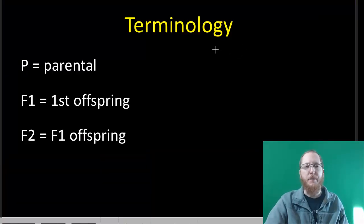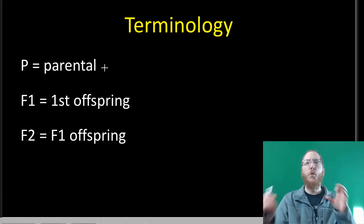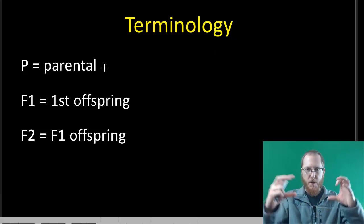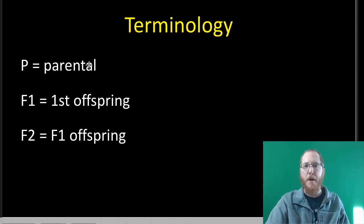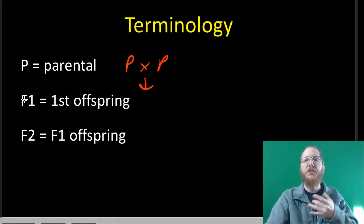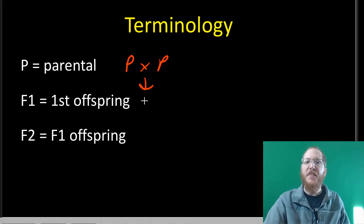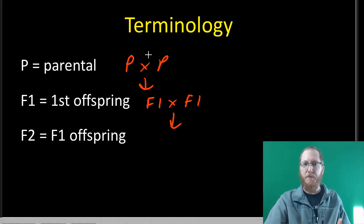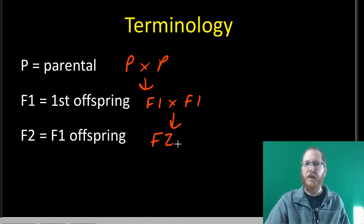So some basic terminology. When we start off, the two original plants that we're going to cross, that we're going to mate, those are going to be our parents, our parental, or P generation. Once we've gone through and we've crossed the parents with the parents, we're going to get offspring, and we call those offspring F1, or first filial, the first set of offspring. We can then take an F1 plant and we can cross it with another F1 plant. And that's going to allow us to get essentially grandchildren. Parents, children, grandchildren. We call those the second filial, F2.